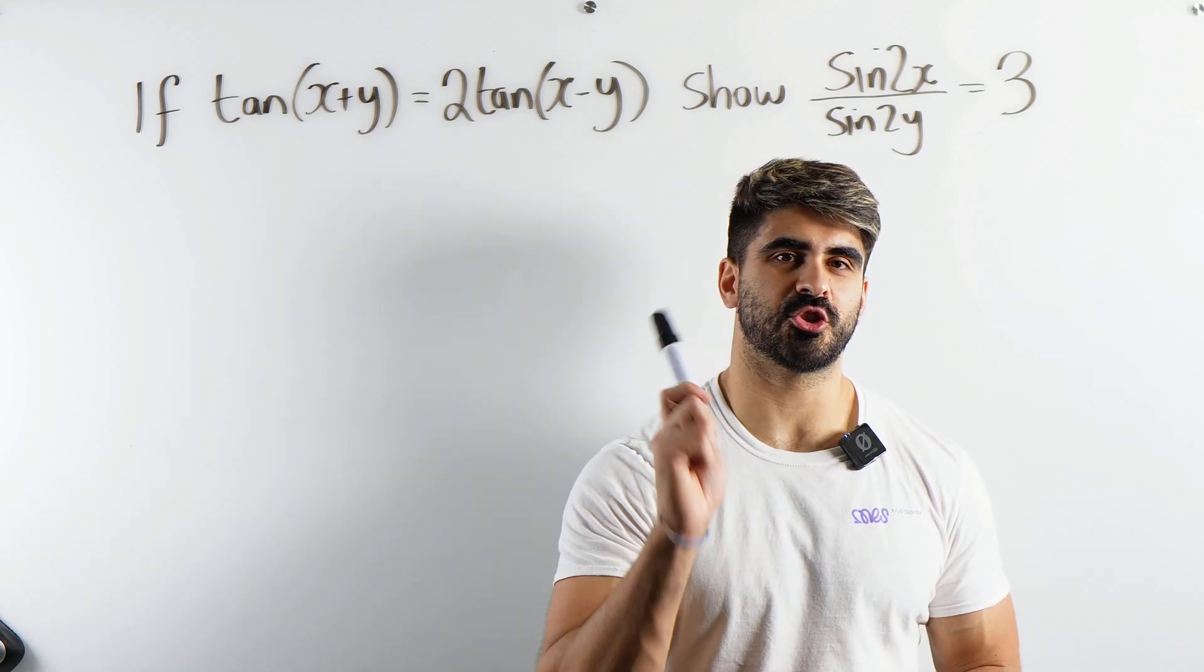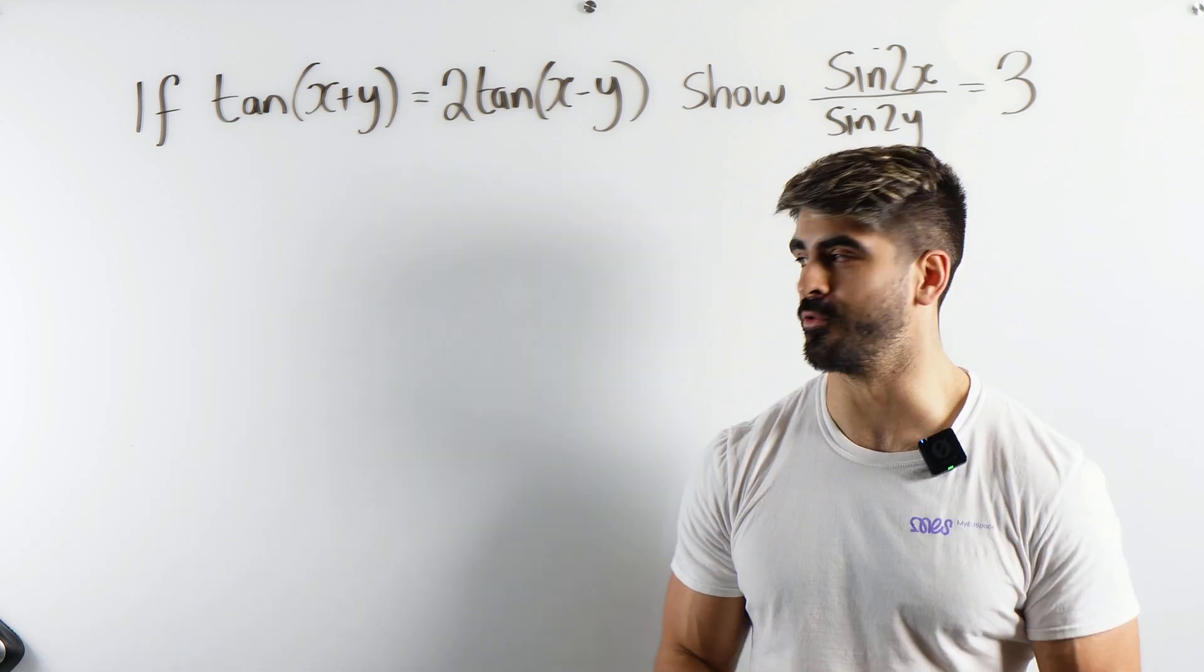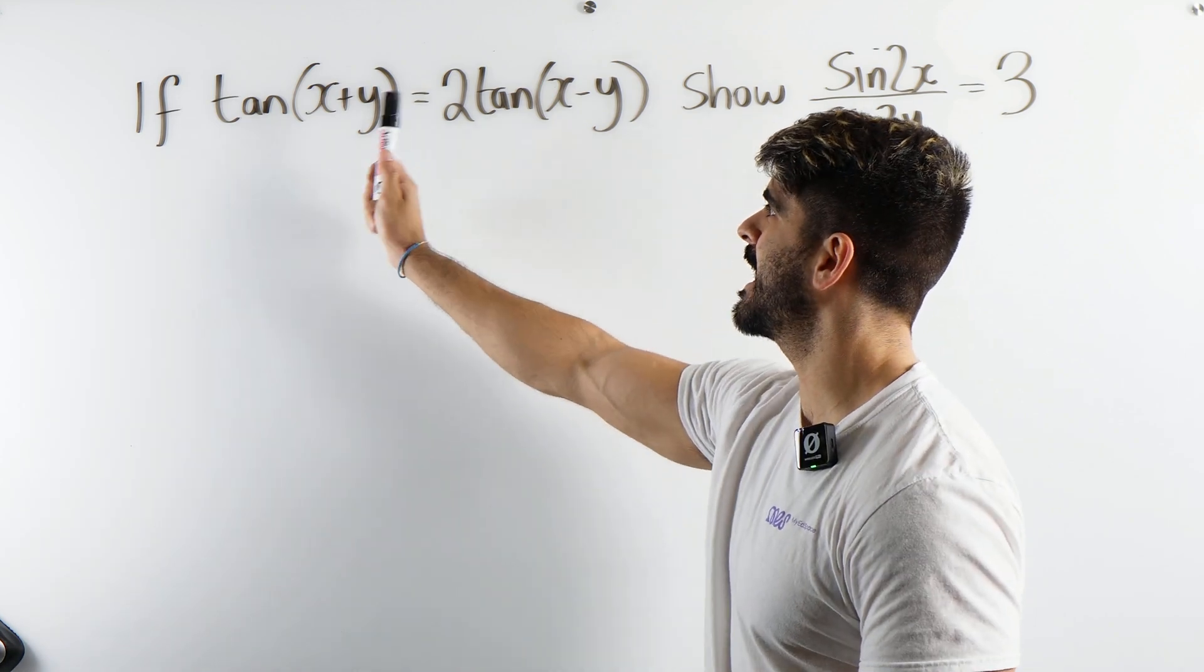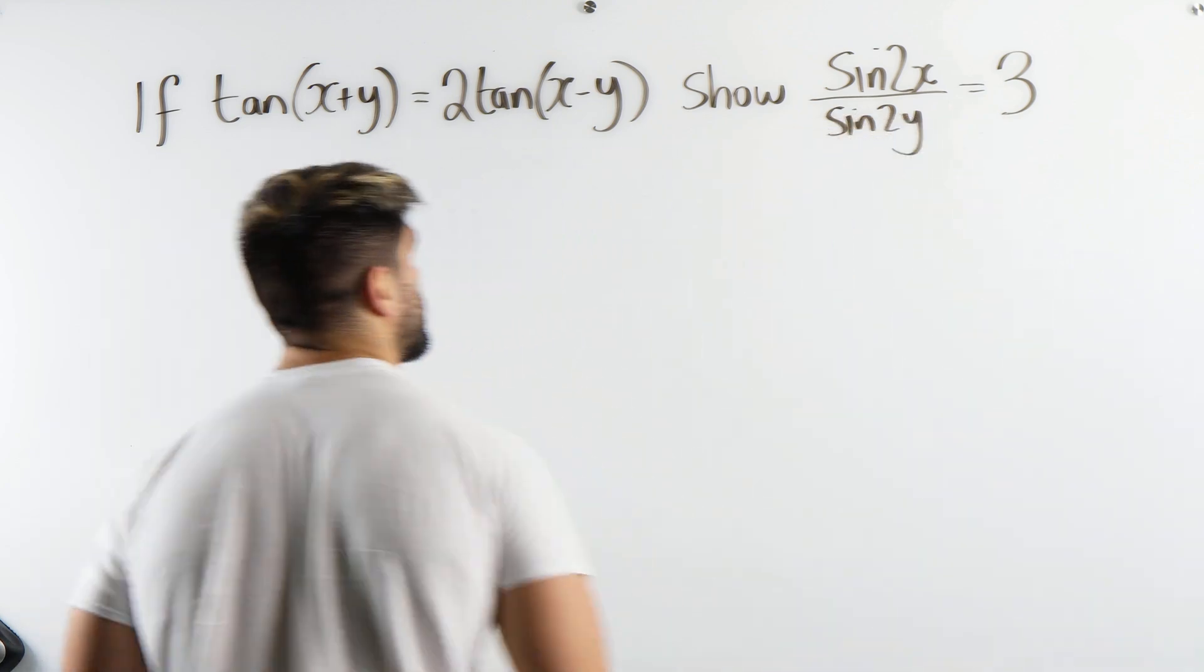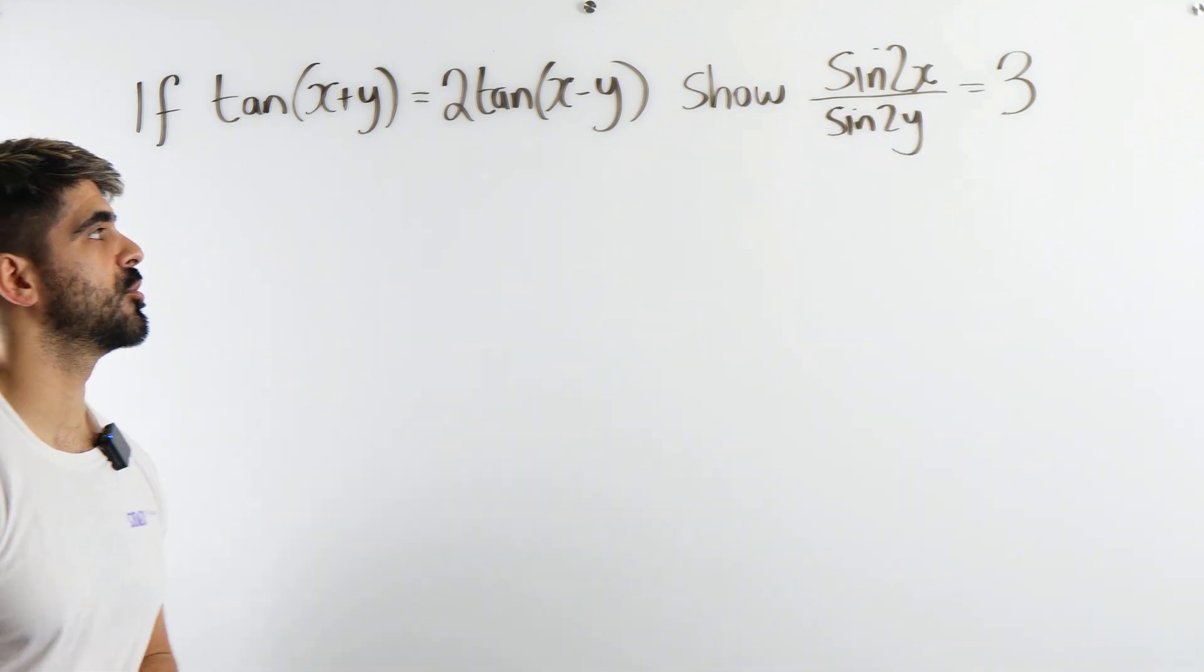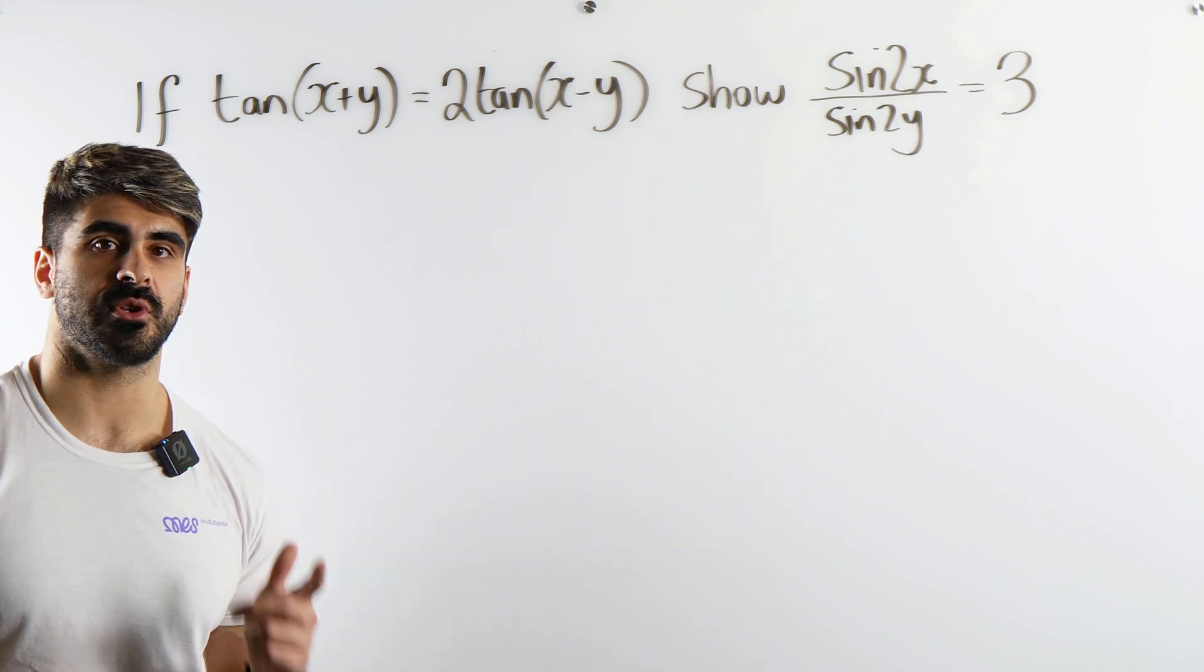Let's take a look at a really tricky trig proof. It says if tan(x+y) is equal to 2 tan(x-y), show that sine of 2x over sine of 2y equals 3.